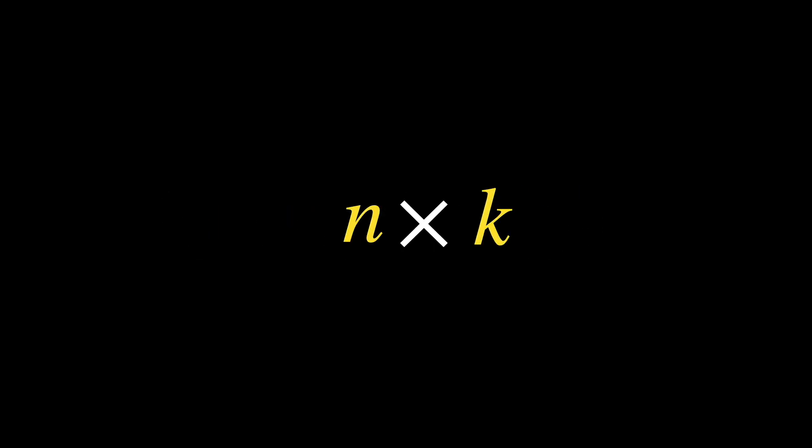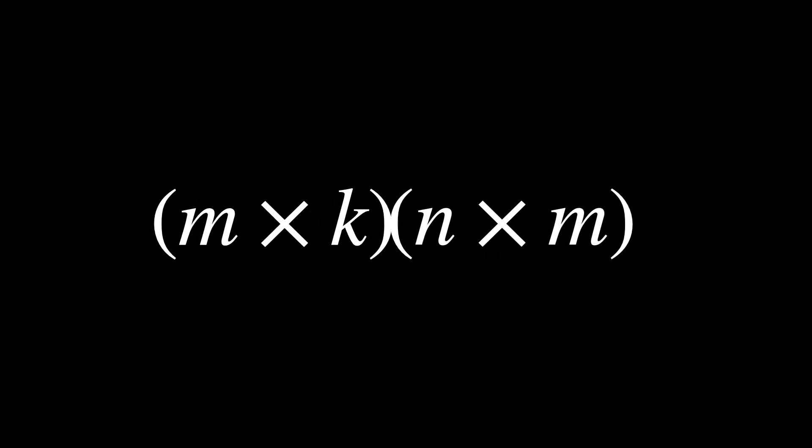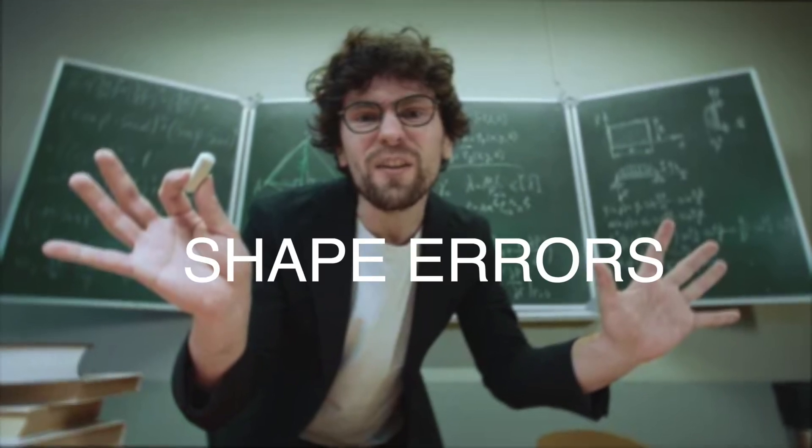But what if things don't go as planned? Let's say we wanted to change the order of this multiplication. Now, multiplying the m by k matrix by the n by m matrix, we are starting in an m-dimensional space and mapping to an n-dimensional space with our first transformation. Then, we are assuming we are in a k-dimensional space, which we are not in, and we try to map it to an m-dimensional space. Boo! That's not possible. And will result in a shape error.